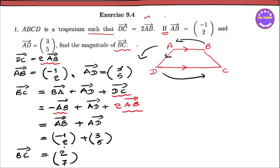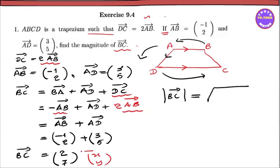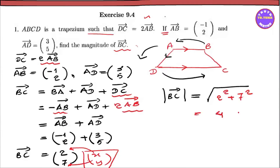So this is the BC vector. This is the magnitude of the BC vector — the modulus of BC vector. This is the square root of x squared plus y squared. With x equals 2 and y equals 7, this is equal to the square root of 53. So the square root of 53 is the magnitude of the BC vector.